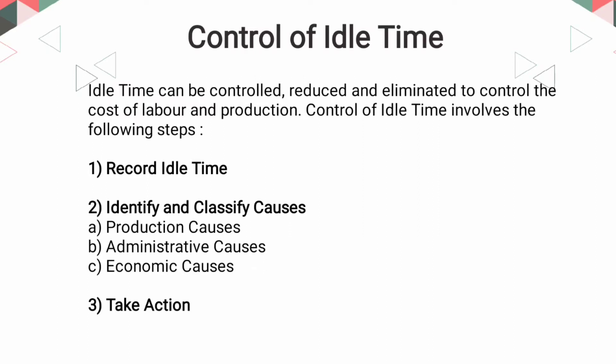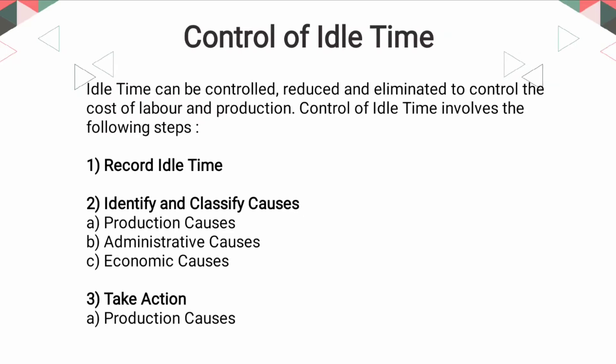Third, take action. Action should be taken after identifying causes. (a) Production causes of idle time can be avoided by regular maintenance of machinery, setting up internal sources of power generation, proper planning of production in advance, and proper planning of materials purchase.